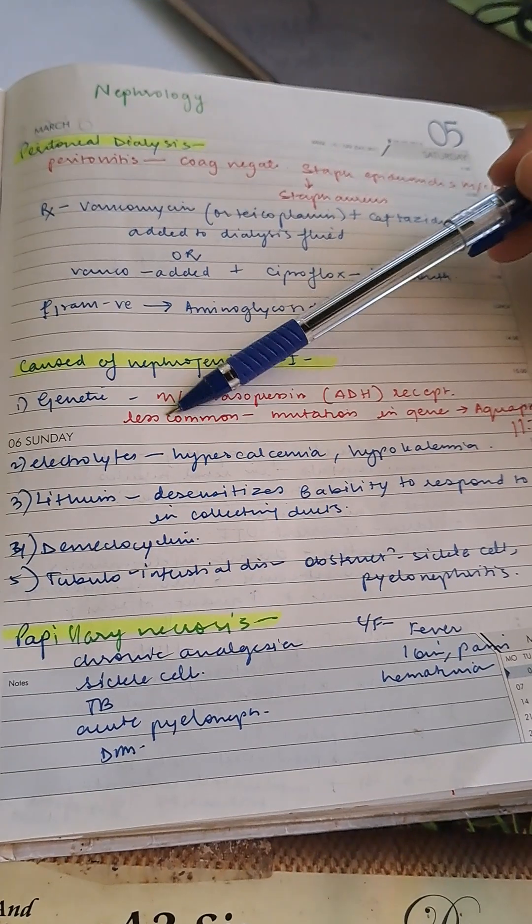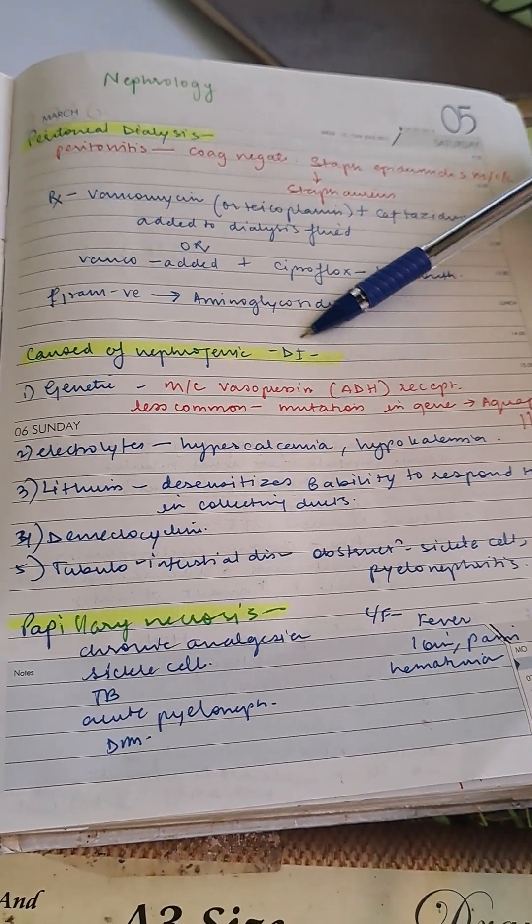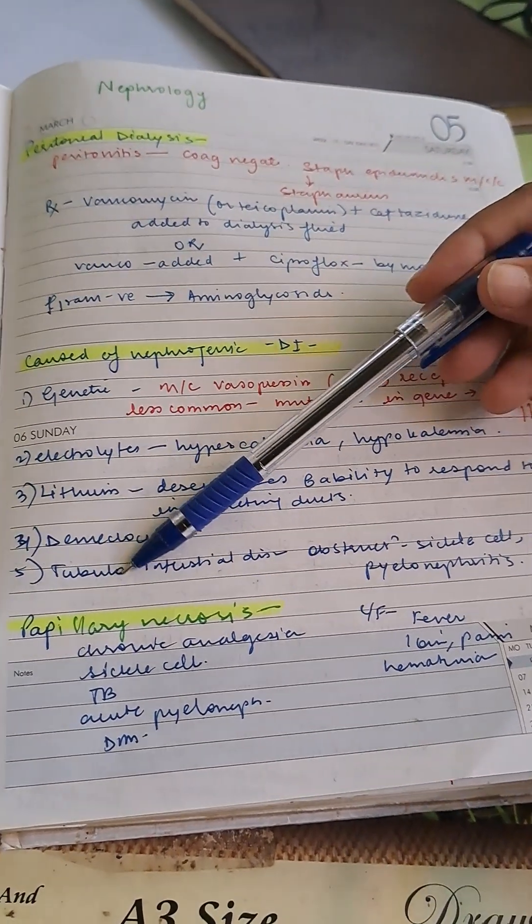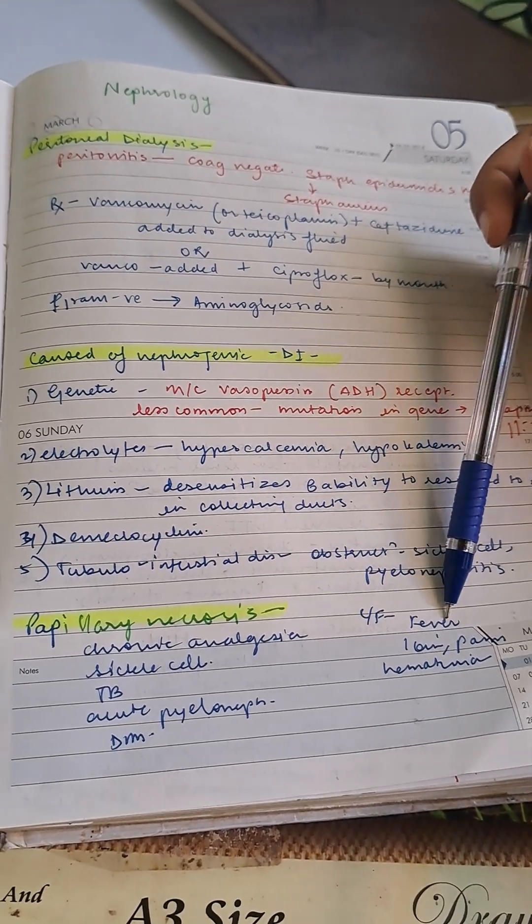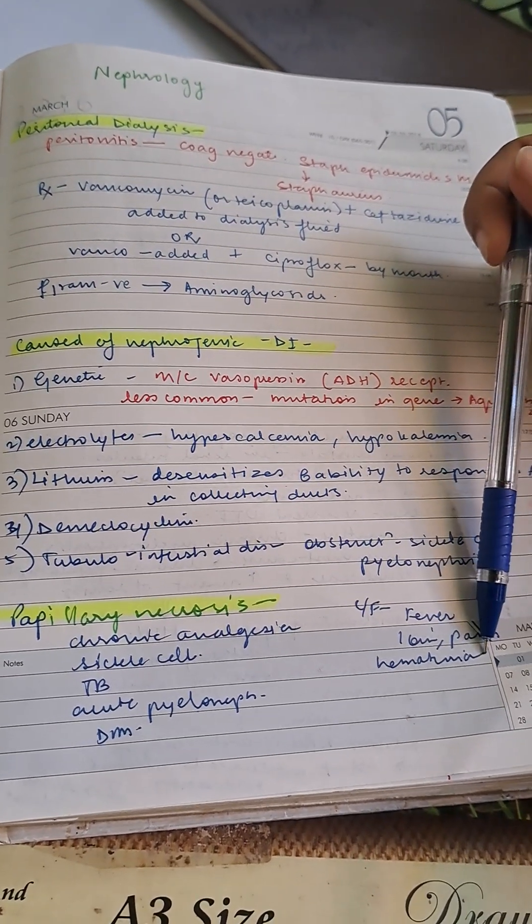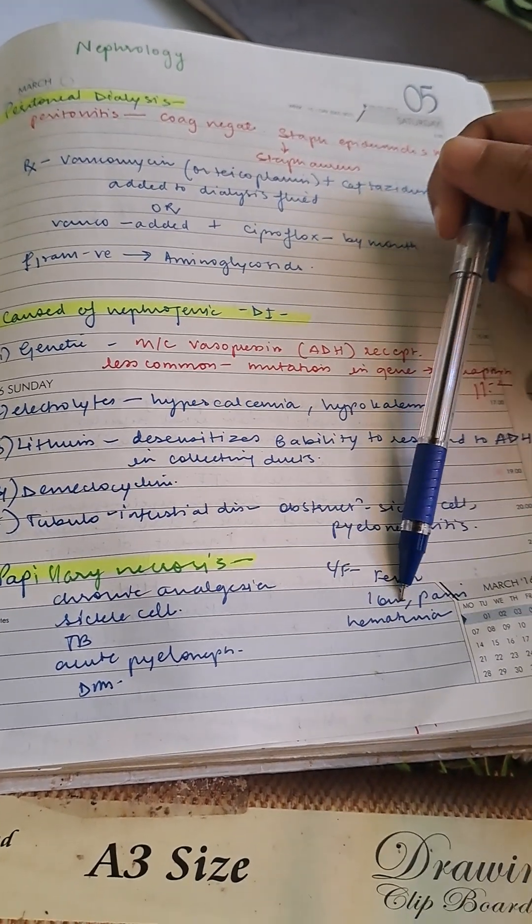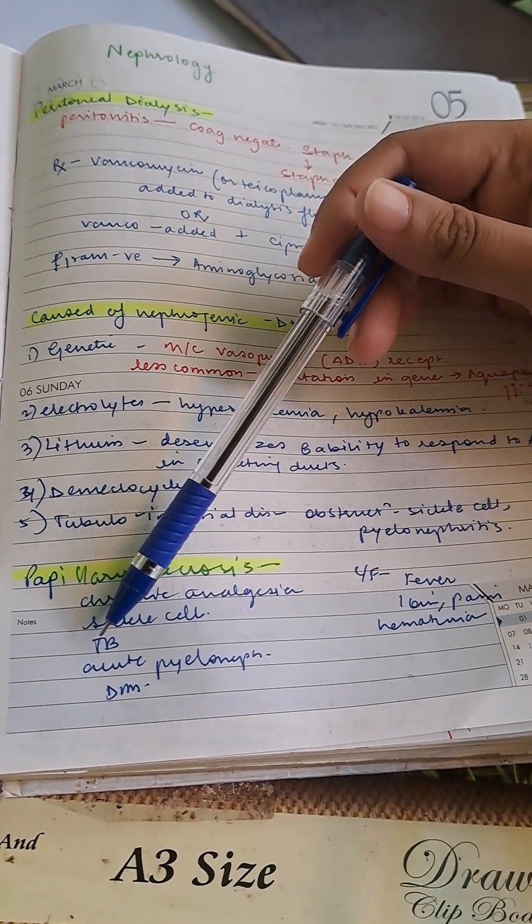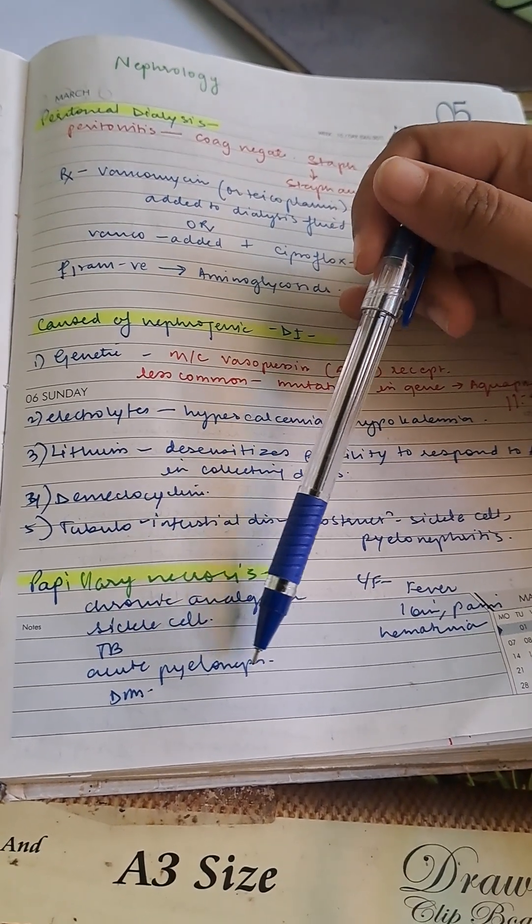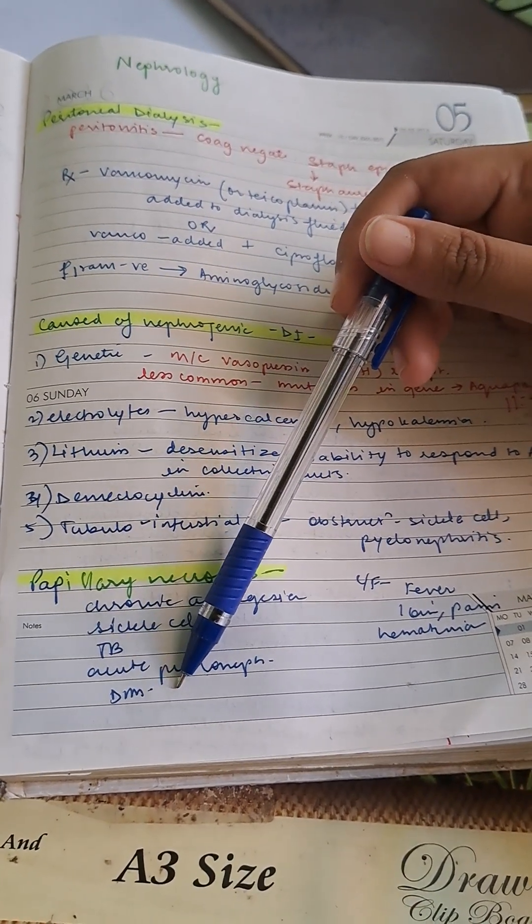Papillary necrosis has vague clinical features: fever, loin pain, and hematuria. Causes are chronic analgesic use, sickle cell disease, tuberculosis, acute pyelonephritis, and diabetes mellitus.